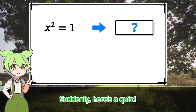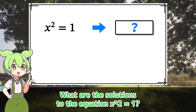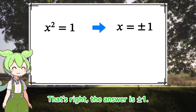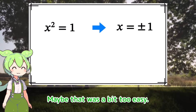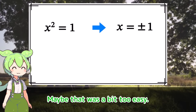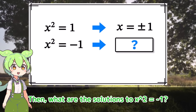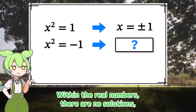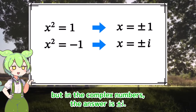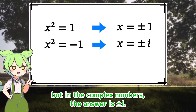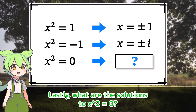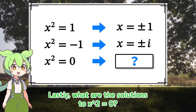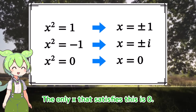Here's a quiz. What are the solutions to the equation x squared equals 1? That's right, the answer is positive or negative 1. Maybe that was a bit too easy. What are the solutions to x squared equals negative 1? Within the real numbers, there are no solutions. But in the complex numbers, the answer is positive or negative i. Lastly, what are the solutions to x squared equals 0? The only x that satisfies this is 0.